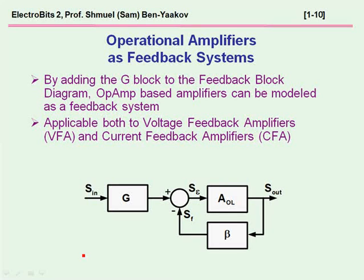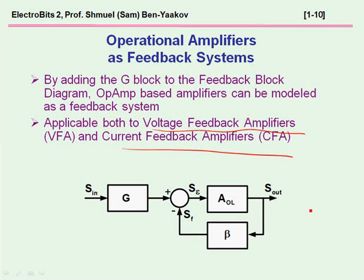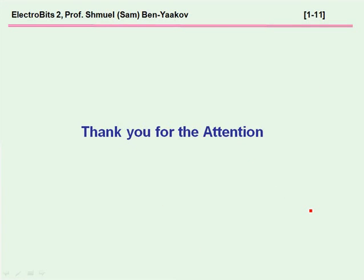In conclusion, by adding the g-block to the feedback block diagram, we can describe operational amplifier-based amplifiers as feedback systems, and then use all the knowledge we have about feedback systems to analyze them. This technique is applicable to both voltage feedback amplifiers and current feedback amplifiers, which we'll see in a future webinar. Thank you very much for your attention.